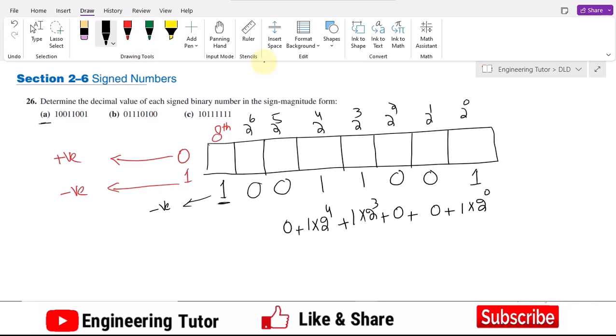Similarly 0 multiplied by 2 raise power 5 is 0 and this one will also give me 0. Now adding them what will I get: this is 1 plus 0 plus 0 plus 8 plus 16 plus 0 plus 0.